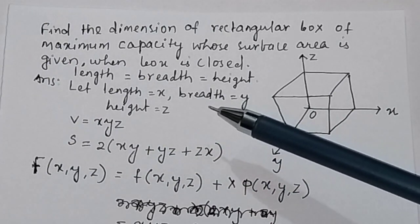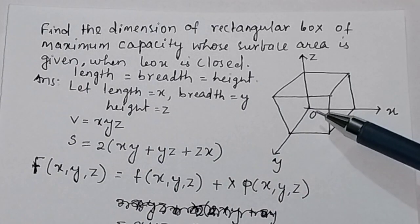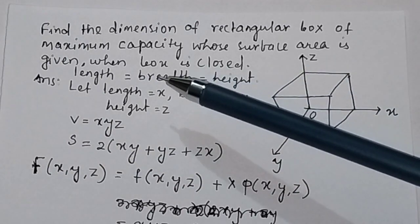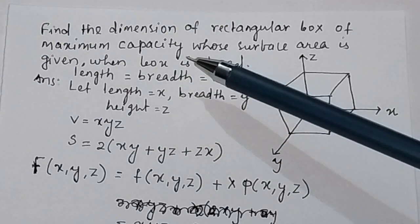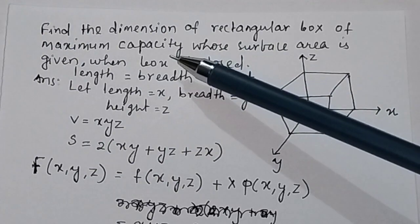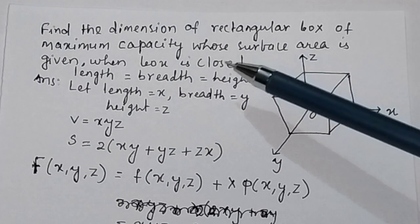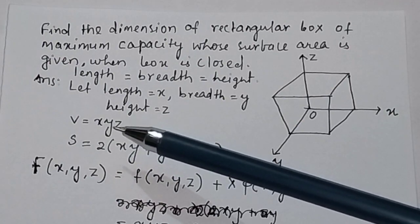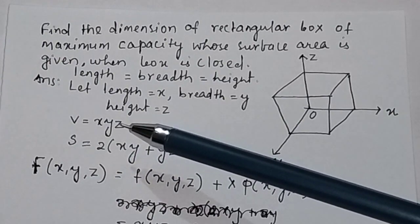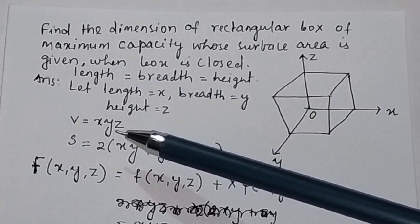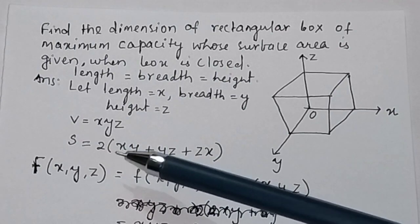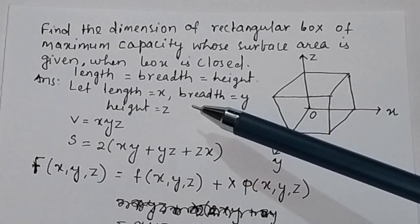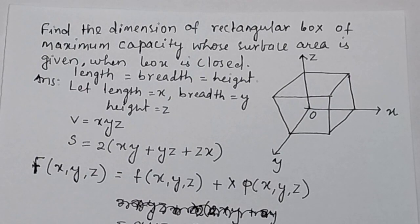Here, x is the length, y is the breadth, and z is the height. We have to prove length equal to breadth equal to height. The condition is that the rectangular box has maximum capacity and surface area is given, and the box is closed. The volume of the rectangular box is given by length × breadth × height, that is x × y × z, and the surface area is given by 2(xy + yz + zx).